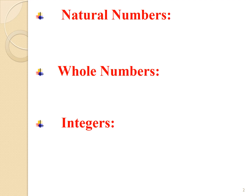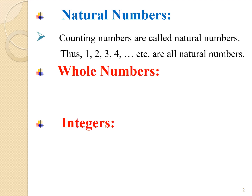Natural numbers. Counting numbers are called natural numbers. Thus, 1, 2, 3, 4, 5, 6, etc. are all natural numbers.